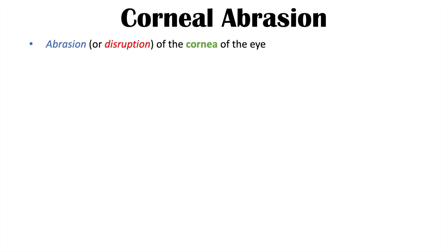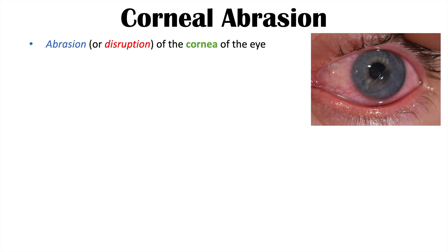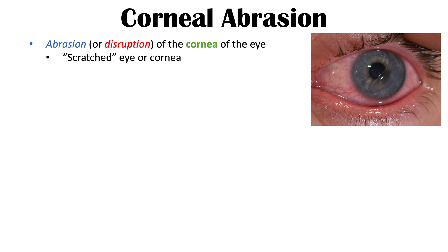A corneal abrasion is an abrasion or a disruption of the cornea of the eye. The cornea is a transparent outer layer on the front of the eye, and an abrasion would be a scrape of this layer — otherwise termed a scratched eye or scratched cornea. It is an epithelial injury, as the outermost layer of the cornea is the corneal epithelium.